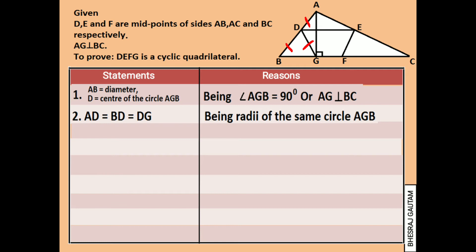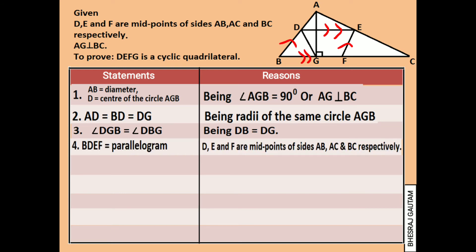Now we can say that angle DGB equals angle DBG, since from statement 2, DB and DG are equal, making the triangle isosceles. We also know that the line joining the midpoints of a triangle always forms a parallelogram, hence BDEF is also a parallelogram.